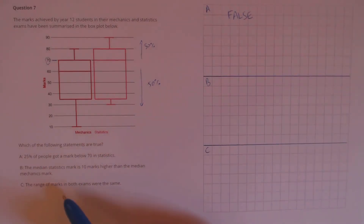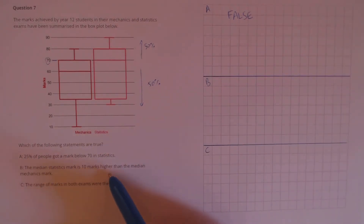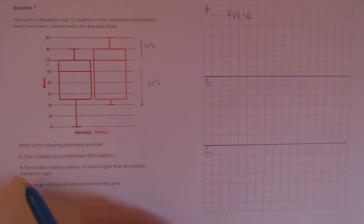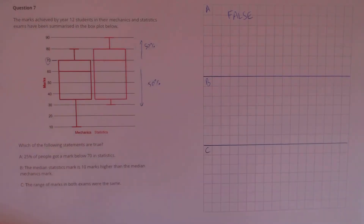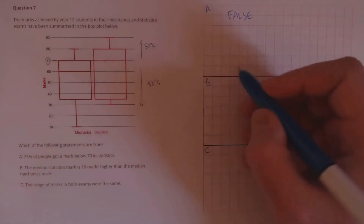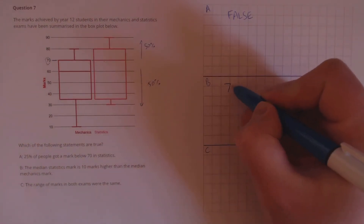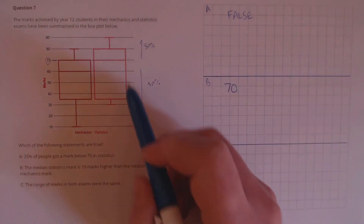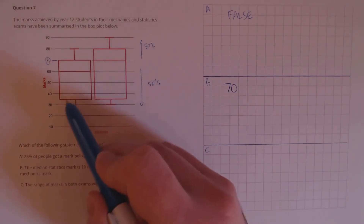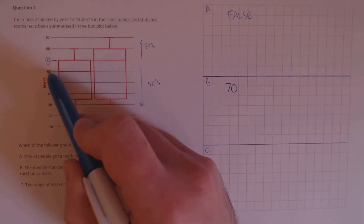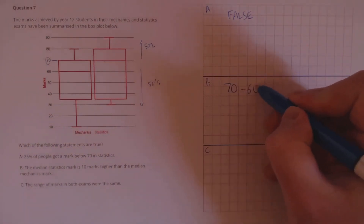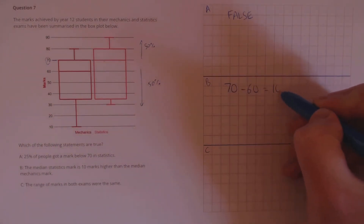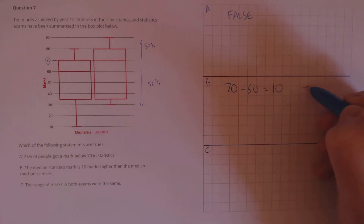B: the median statistics mark is 10 marks higher than the median mechanics mark. We know the median statistics mark is 70, and the median mechanics mark is 60, which is 10 marks higher. So true.